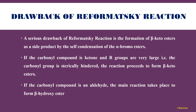There are some drawbacks in Reformatsky reaction. A serious drawback is the formation of beta-keto esters as a side product by the self-condensation of the alpha-bromo ester. This means the alpha-bromo ester undergoes self-condensation and produces beta-keto esters as a side product. Additionally, if a ketone is used instead of an aldehyde and the R groups on the ketone are very large, then the carbonyl group is sterically hindered and the reaction proceeds to form beta-keto esters, not beta-hydroxy esters. If an aldehyde is used as the carbonyl compound, then the main reaction takes place and produces beta-hydroxy ester.